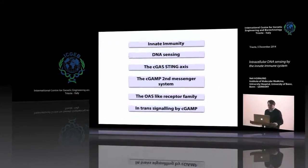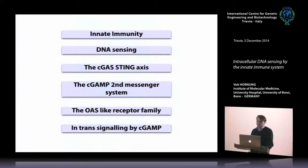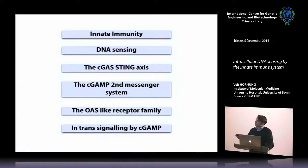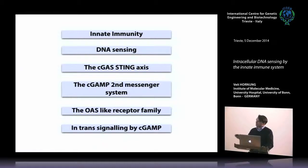This is a brief outline of my presentation. I want to talk about intracellular DNA sensing as the main topic. I'll start with some introductory words on innate immunity, then focus on nucleic acid sensing, the cGAS-STING axis, which was discovered in the past two to three years as a very important sensing mechanism in the cytoplasm detecting DNA. I'll talk about how the system amplifies its activation across different cells, draw comparisons to the OAS-like receptor family, and then discuss the intracellular signaling of cGAMP.